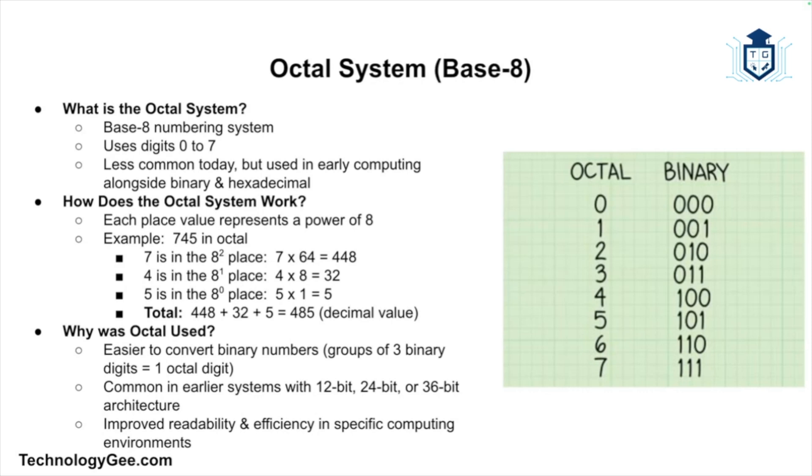The 7 is in the 8 to the second place. So that means you have 7 times 64 and that gets you 448. The 4 is in the 8 to the first place, and that means 8 times 4, which equals 32. Then you have 5, which is in the 8 to the zero place, and that means 5 times 1 equals 5. So you add up all those numbers together: 448 plus 32 plus 5, that equals 485. So the number 745 in octal notation equals 485 in decimal notation.